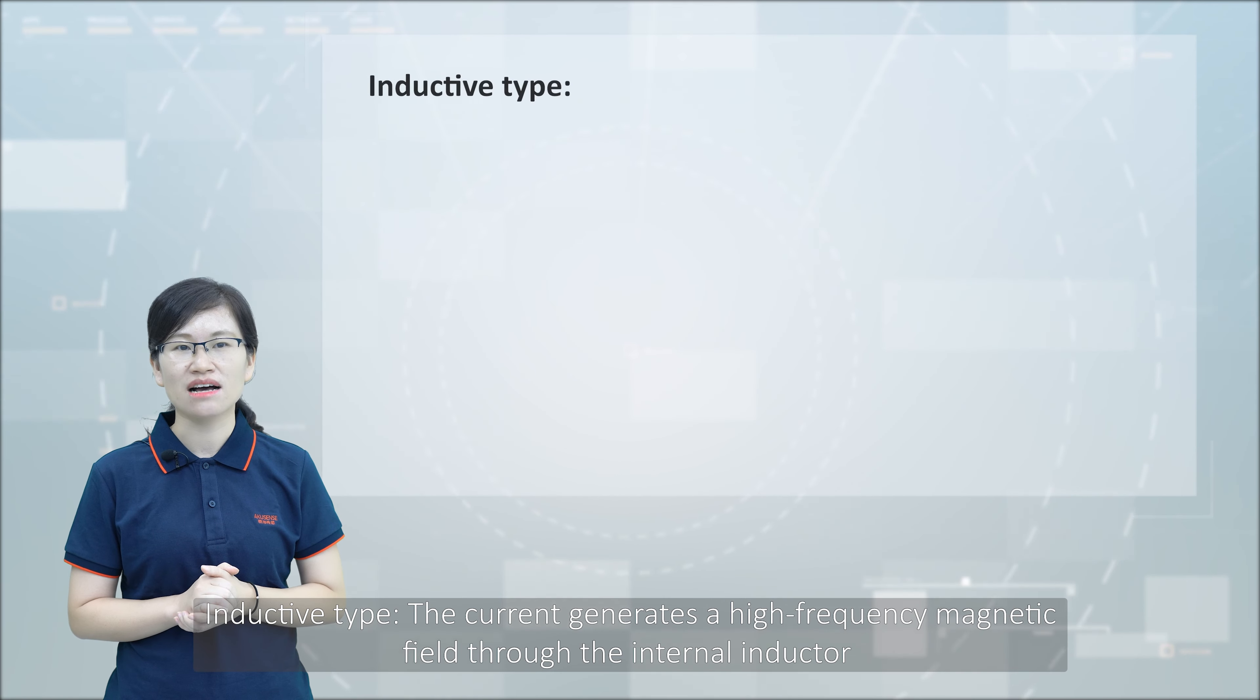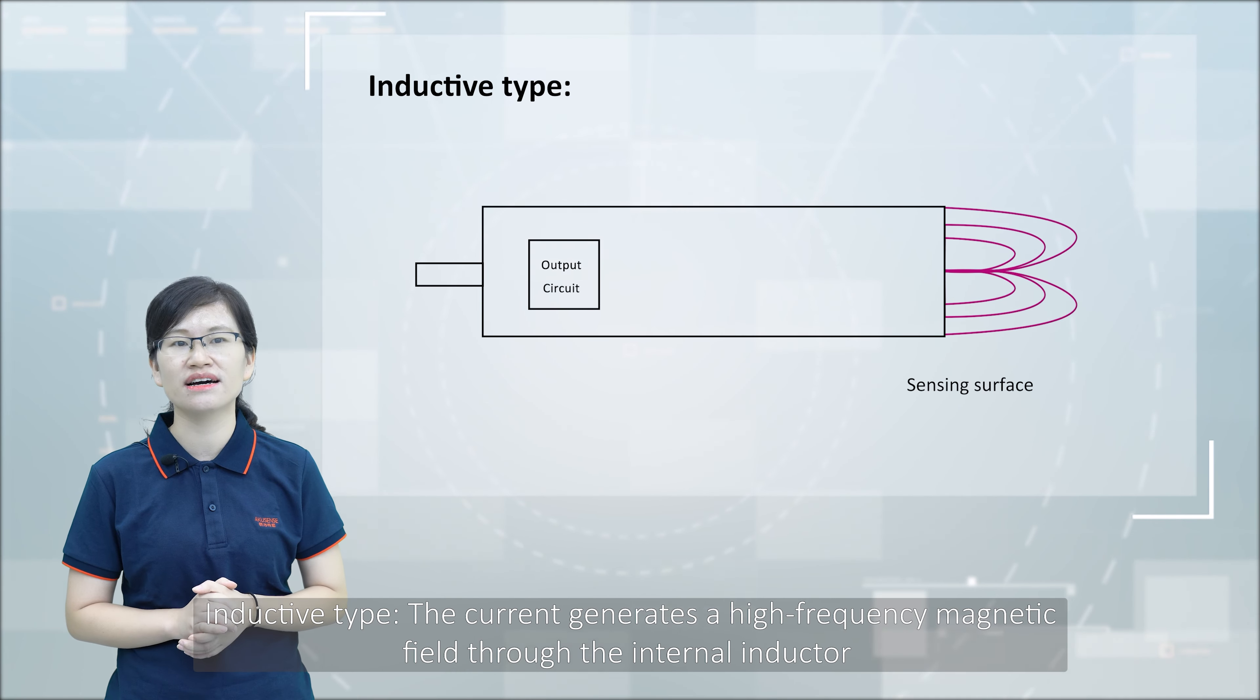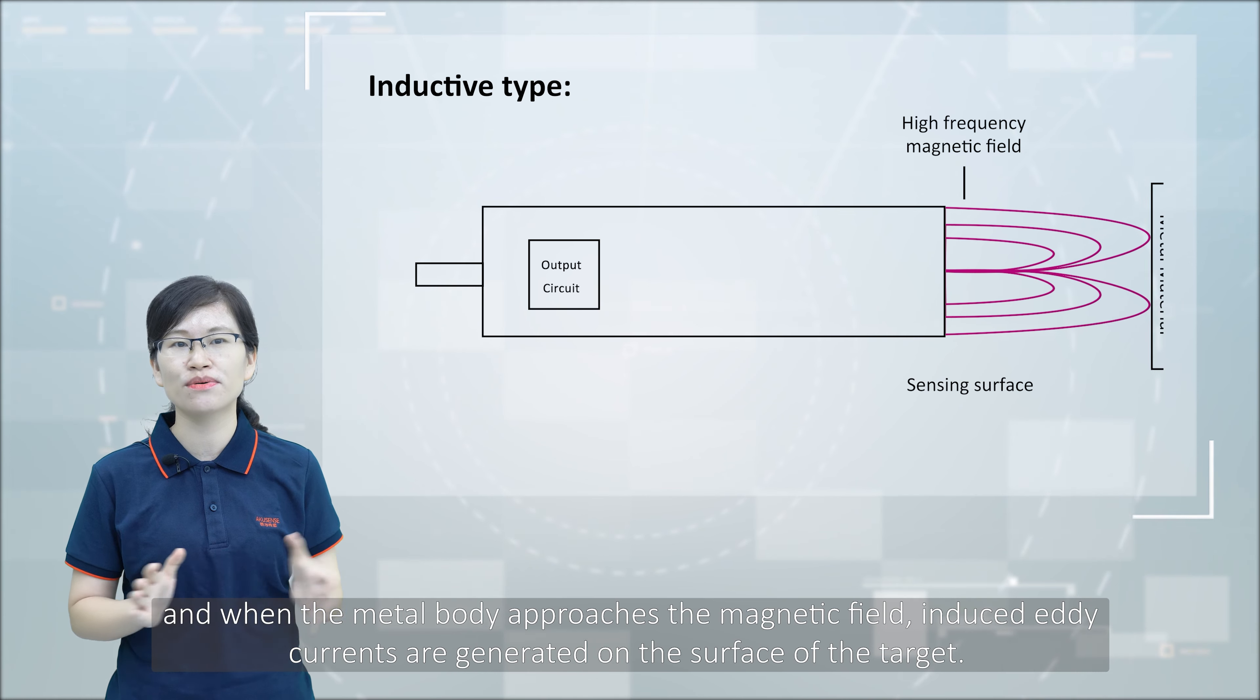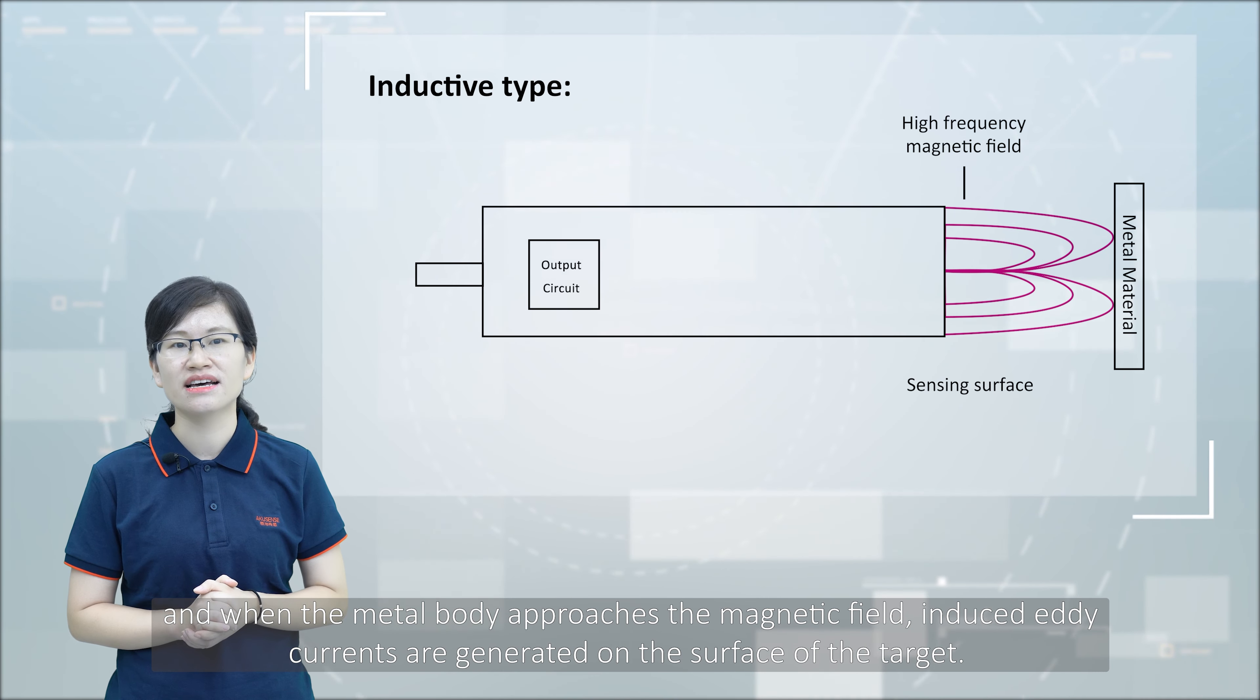For inductive type, the current generates a high frequency magnetic field through the annular inductor, and when the metal body approaches the magnetic field, induced eddy currents are generated on the surface of the target.